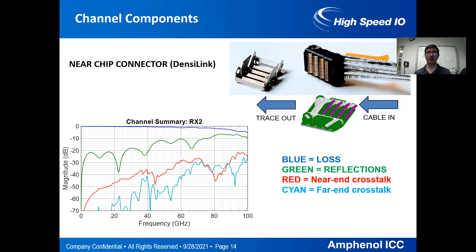The near-chip connector has two pieces: the Densalink cable piece and a small surface mount piece that goes onto the board surface. Again we can see loss, reflections, and crosstalk. The crosstalk is low enough, but it does tend to build up at higher frequencies.